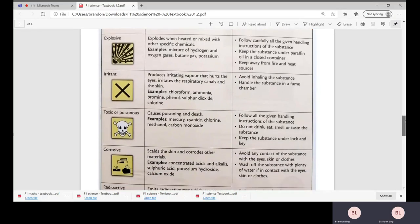Next we have the explosive diagram. The chemicals will explode when heated or mixed with other specific chemicals. For example, hydrogen gas, oxygen gas, butane gas, and also potassium. The instruction will be: follow carefully all the given handling instructions, keep the substance under paraffin oil in a closed container, and keep away from fire and heat sources.